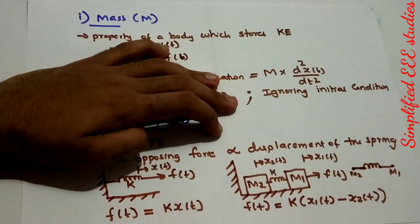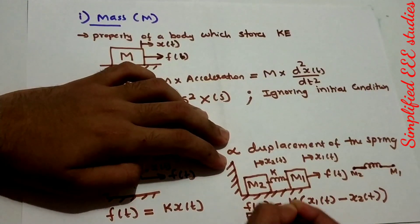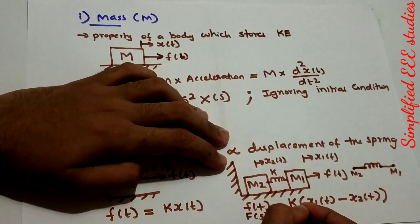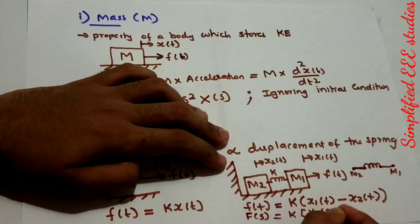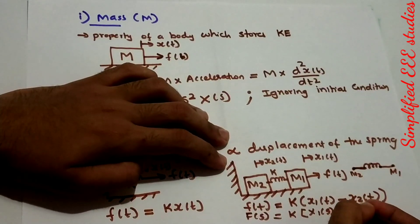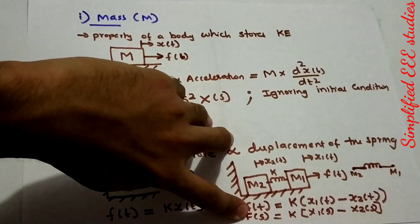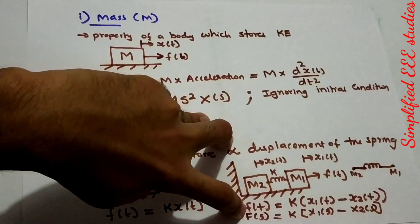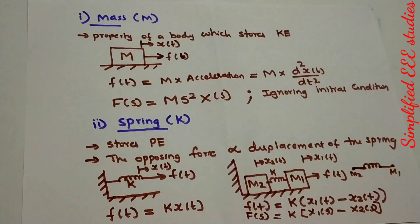If you want to ignore initial conditions and take the Laplace transform, then F(s) equals k into (x1(s) minus x2(s)). Using the Laplace transform to ignore initial conditions makes the analysis easier.